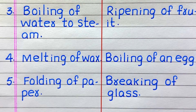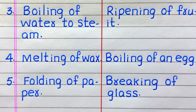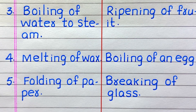Third example of an irreversible change is ripening of fruit. Fourth, boiling of an egg. Fifth, breaking of glass.